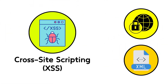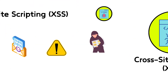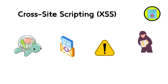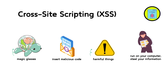12. Cross-Site Scripting (XSS). Cross-site scripting is like handing out magic glasses at the door of a movie theater that make you see things that aren't really part of the movie. In XSS, hackers insert malicious code into websites that look normal. When you visit such a website, this code can run on your computer, steal your information, or do other harmful things without you knowing.